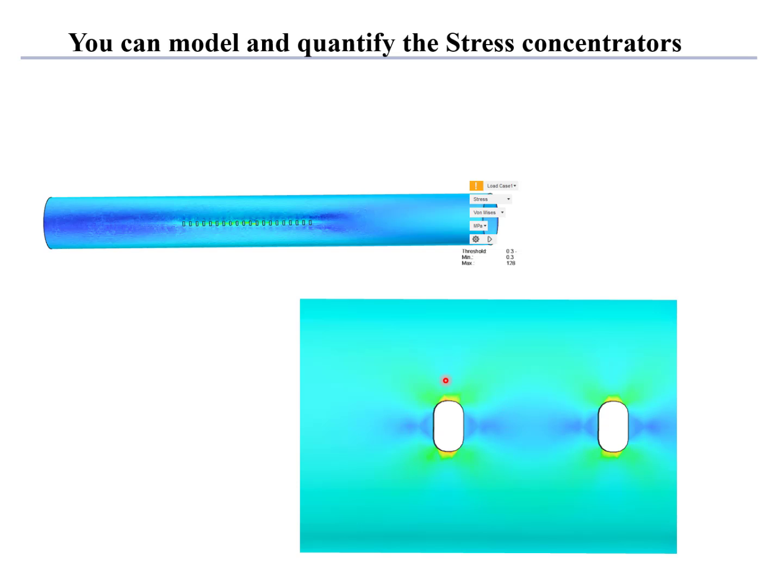In the case of a pressure vessel, we have a biaxial stress state which includes a hoop stress, which wraps around the cylinder, and the longitudinal stress, which goes along the axis of the cylinder. So we have a biaxial stress state and we must find an equivalent uniaxial stress to do the fatigue calculations.